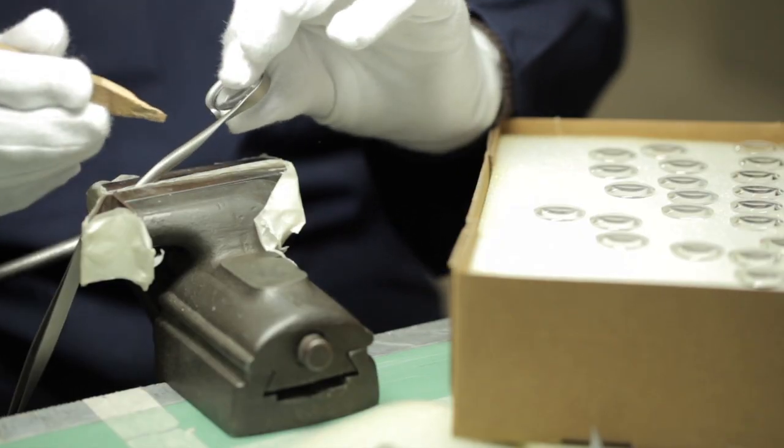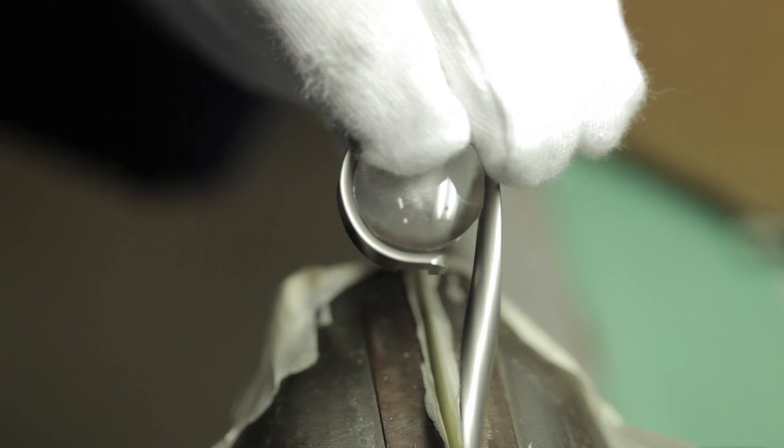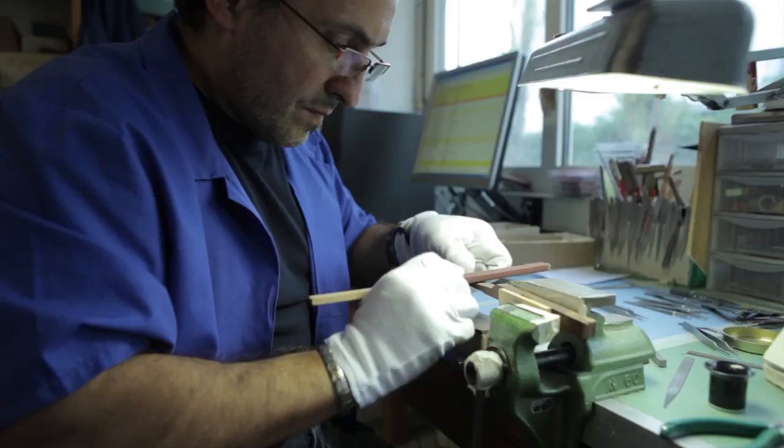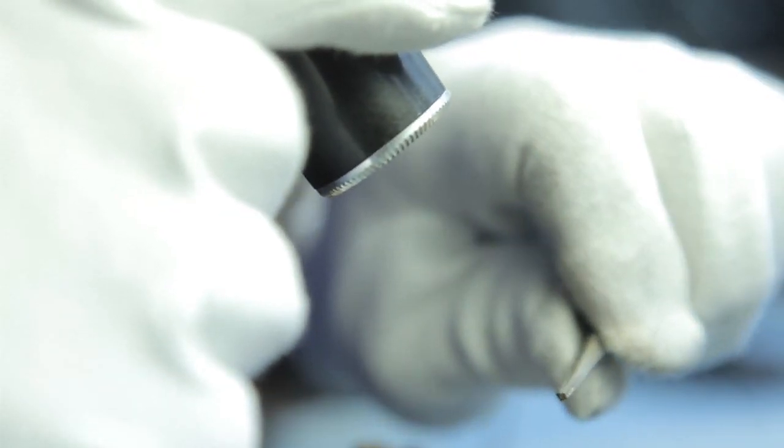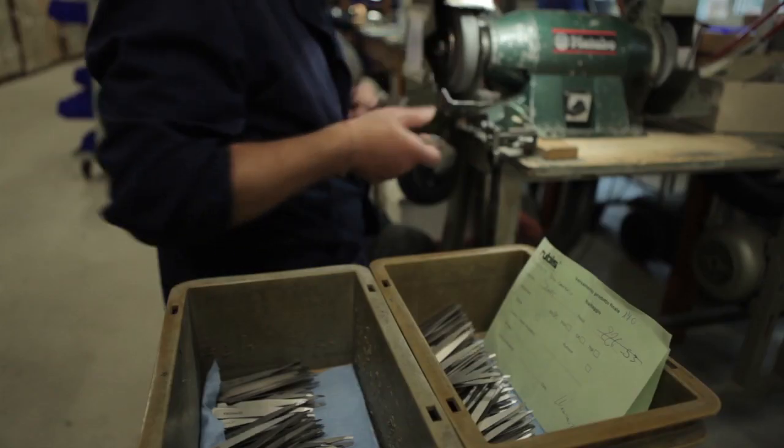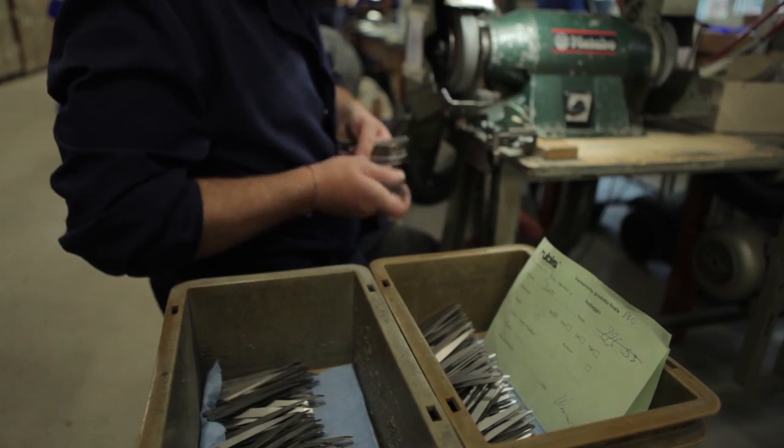More than 45 production steps are required to produce one pair of precision tweezers. Throughout the production process, the tweezers are repeatedly checked under a magnifying glass, so that no product leaves our factory without meeting the very highest standards.